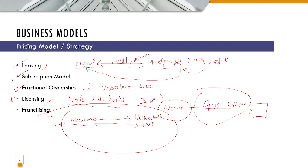In all these cases — leasing, subscription models, licensing, and franchising — ownership is not getting transferred. When you sell a product, ownership gets transferred to the buyer, but in these alternatives, the ownership of the goods does not get transferred. For example, when Nestle entered into the licensing deal with Starbucks and paid 1.75 billion dollars, it only got the right to sell Starbucks' products globally — it did not own Starbucks.